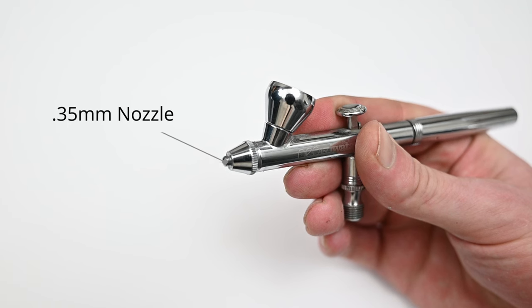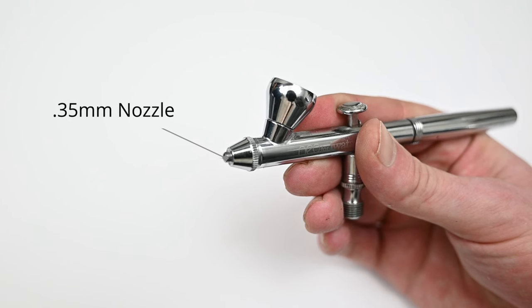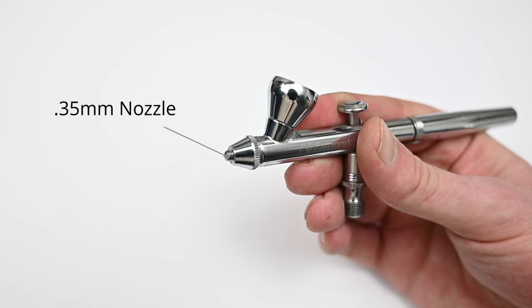The Neo for Iwata is equipped with a 0.35 millimeter nozzle. A nozzle size like this is great for all around airbrushing.